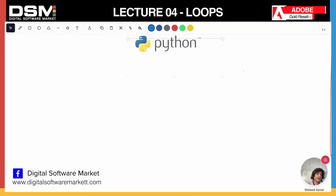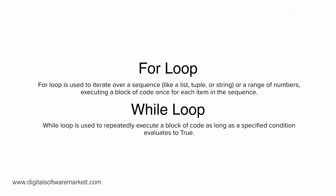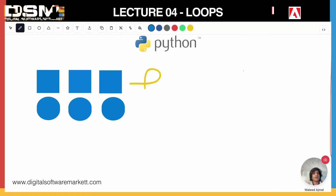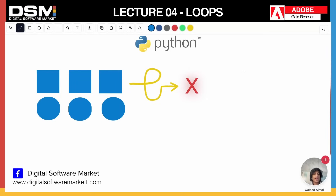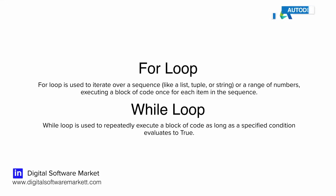I actually almost never use a while loop — I mostly use for loops. It depends on preference; for loops are easier to manage and less likely to run into thousands of unintended iterations. A while loop keeps repeating until a value is reached, whereas a for loop repeats until a specified count. For example: for each element of the array do operation X, versus while a certain value is reached keep doing it. The basic keywords to remember are 'for' and 'while'.